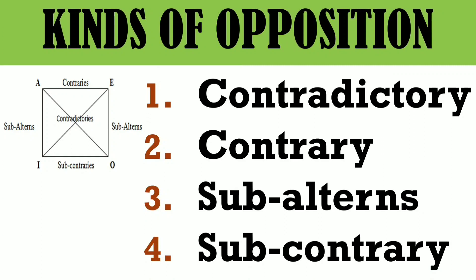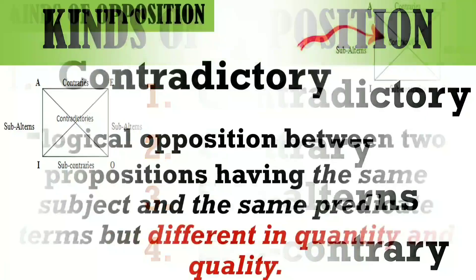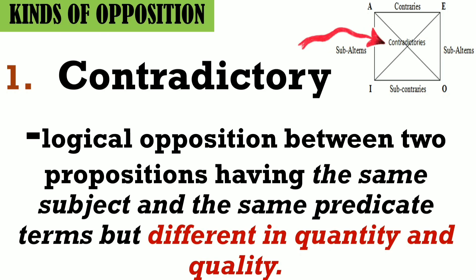Let's proceed now to the kinds of opposition. We have contradictories at the center, contraries at the top, subalterns or subalternations on both sides of the square, and subcontraries at the bottom. Contradictories exist between A and O propositions, and between E and I propositions. It is a logical opposition between two propositions having the same subject and predicate terms, but differing in both quantity and quality — because A is universal and O is particular, A is affirmative and O is negative.